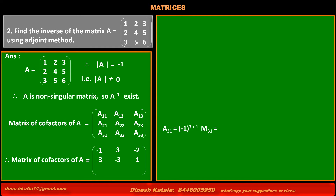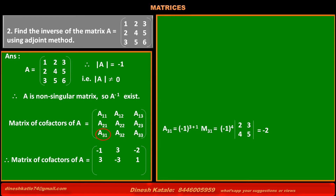Cofactor of element at third row, first column, A31 = (-1)^(3+1) × minor M31 = (-1)^4 × (2×5 - 3×4) = 1 × (10 - 12) = -2. Thus the value of cofactor A31 is -2.